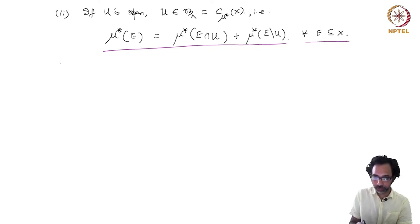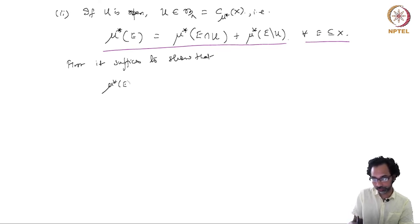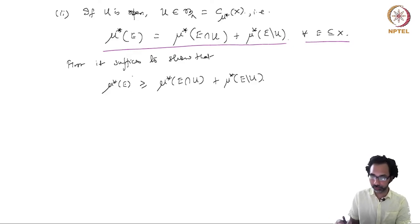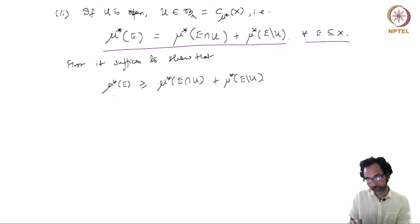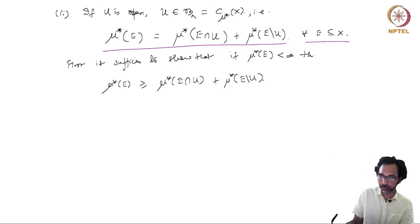It suffices to show that μ*(E) ≥ μ*(E ∩ U) + μ*(E \ U), because the other inequality is obvious from μ* being an outer measure — by countable sub-additivity, μ*(E) ≤ the right-hand side. If μ*(E) is infinite there is nothing to show, so we restrict attention to the case where μ*(E) is finite.